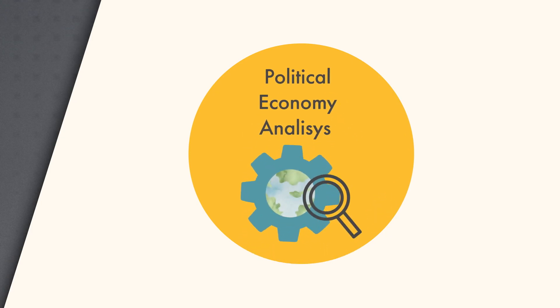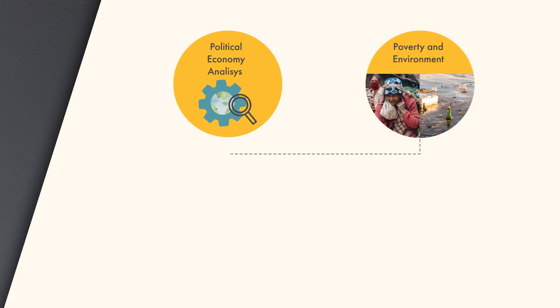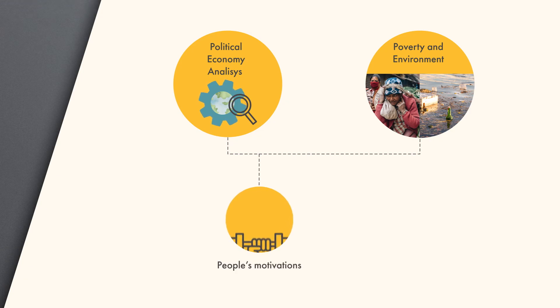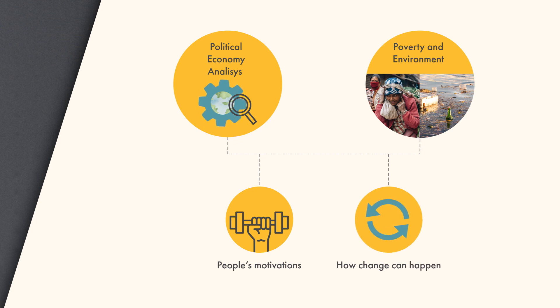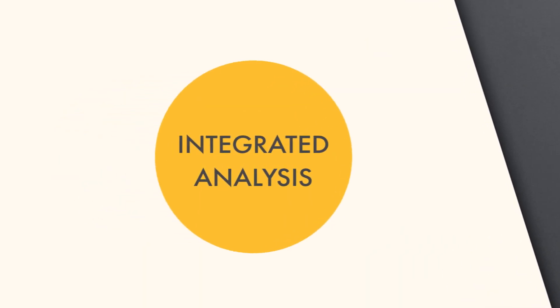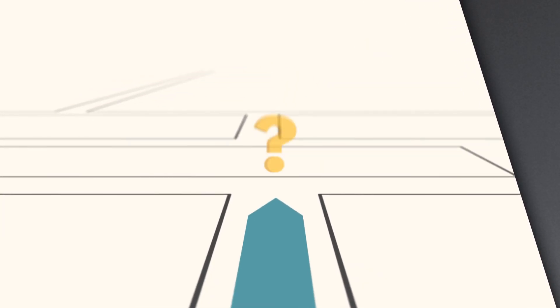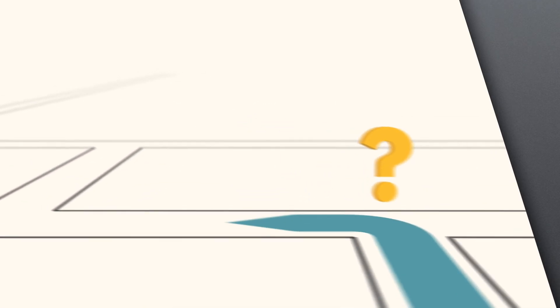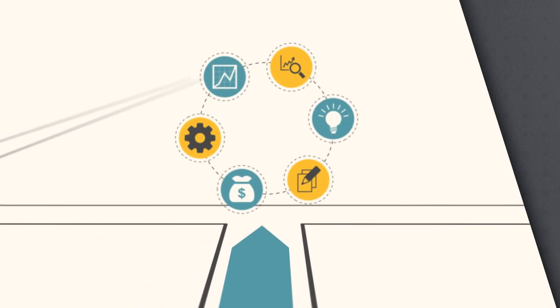Finally, as mentioned, the interaction of poverty and environment is deeply political. Forms of political economy analysis can draw out people's motivations, their various powers, and the process of how change can happen — and how change has happened. That form of context analysis through political economy tools can be extremely helpful. Two last points about integrated analysis: firstly, they really need to be decision-centered — they need to inform decisions throughout the policy cycle, not simply serve as academic treatises.